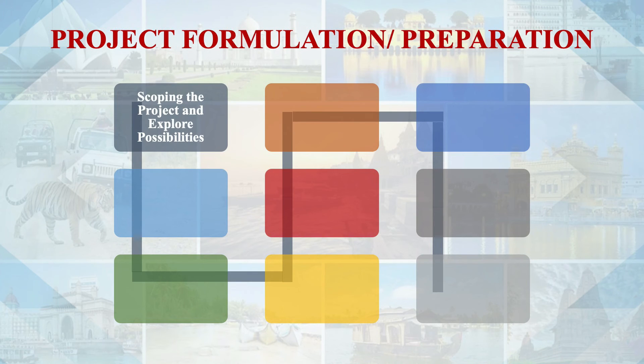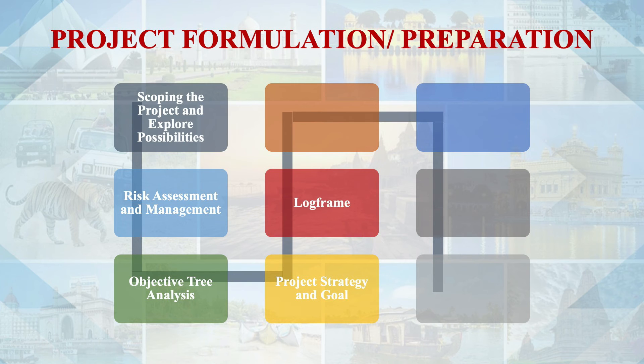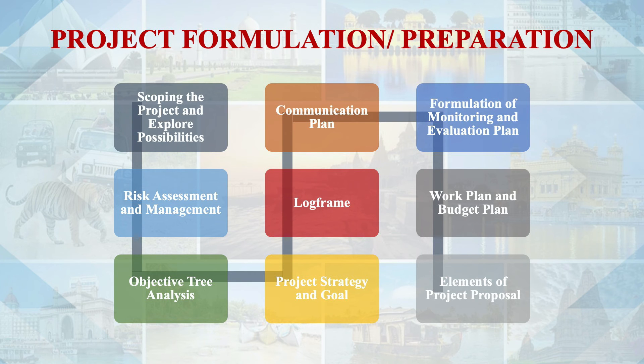Once we have an idea and it passes screening, we need to formulate a project report. A project report is prepared for project inception and submitted after completion. Key elements include scoping the project, risk assessment and management, objective tree analysis, project strategy and goals, communication plan, monitoring and evaluation plan, work plan, budget plan, and elements of the project proposal.